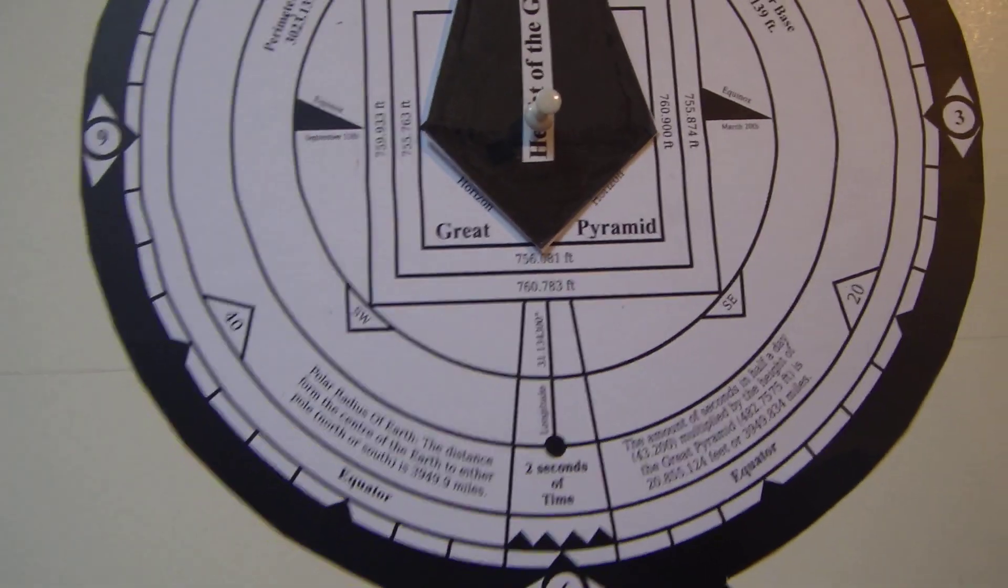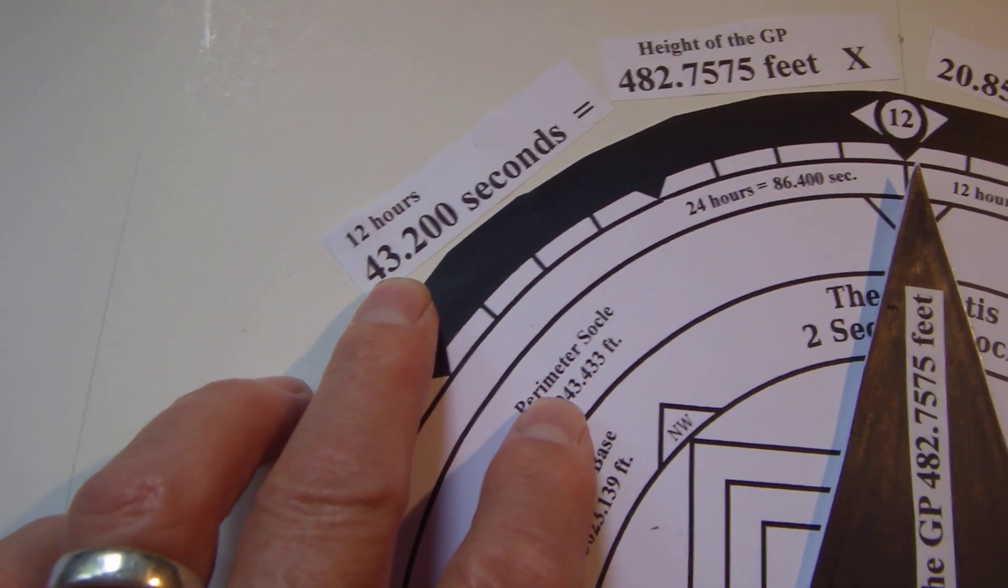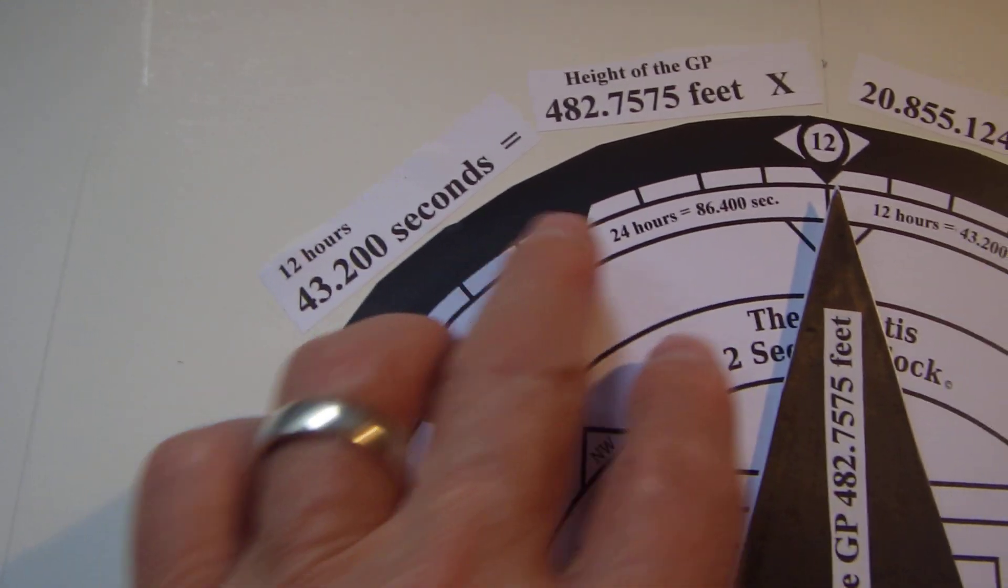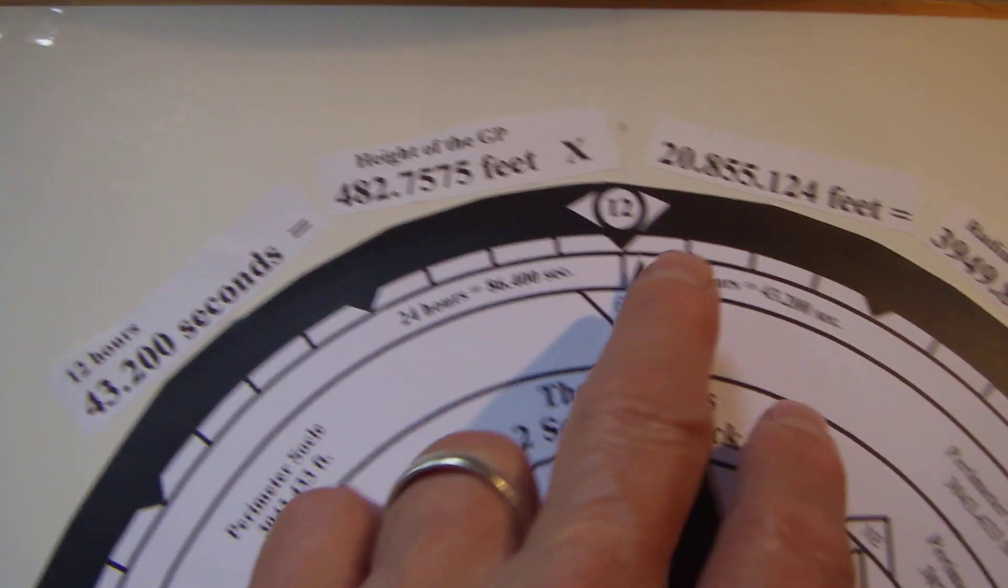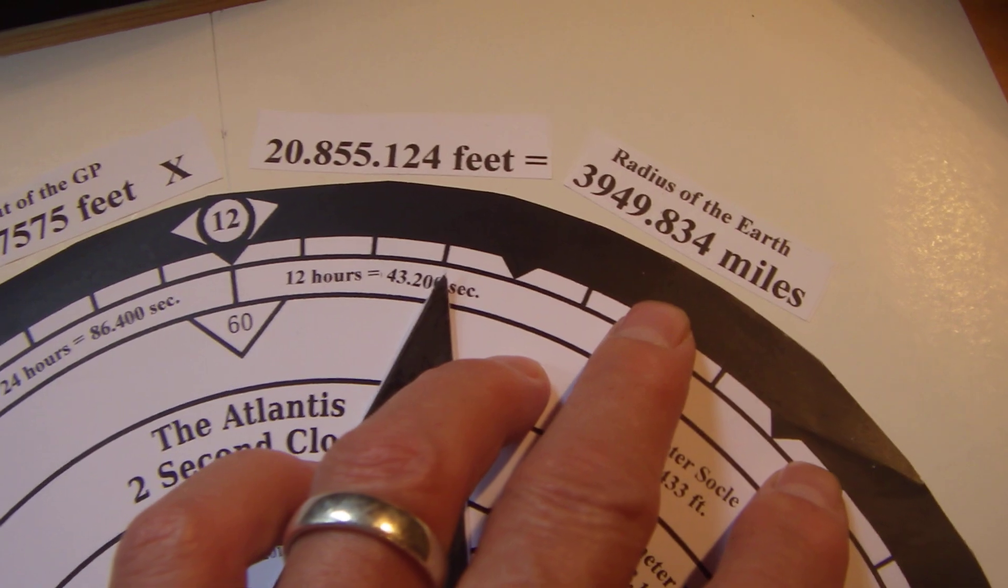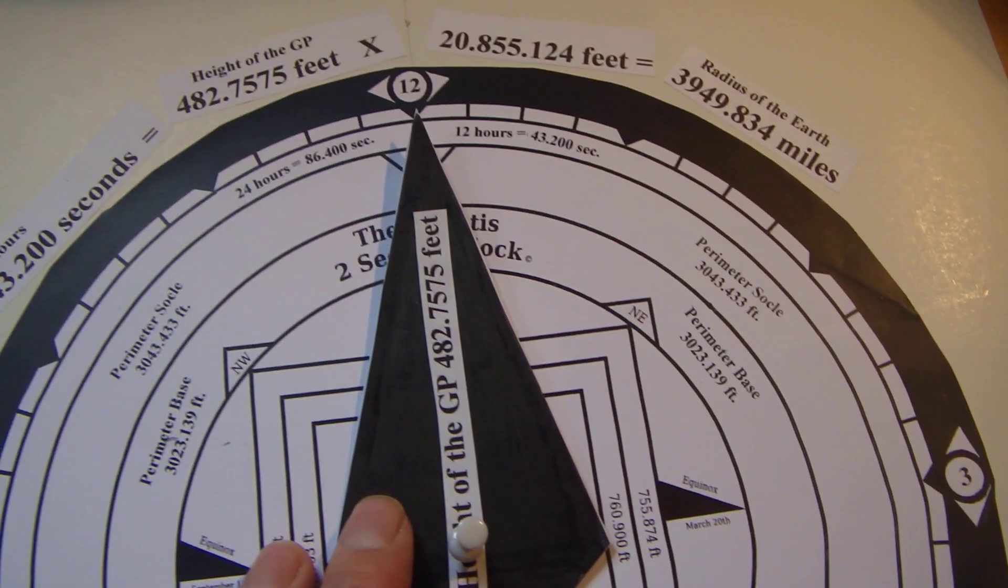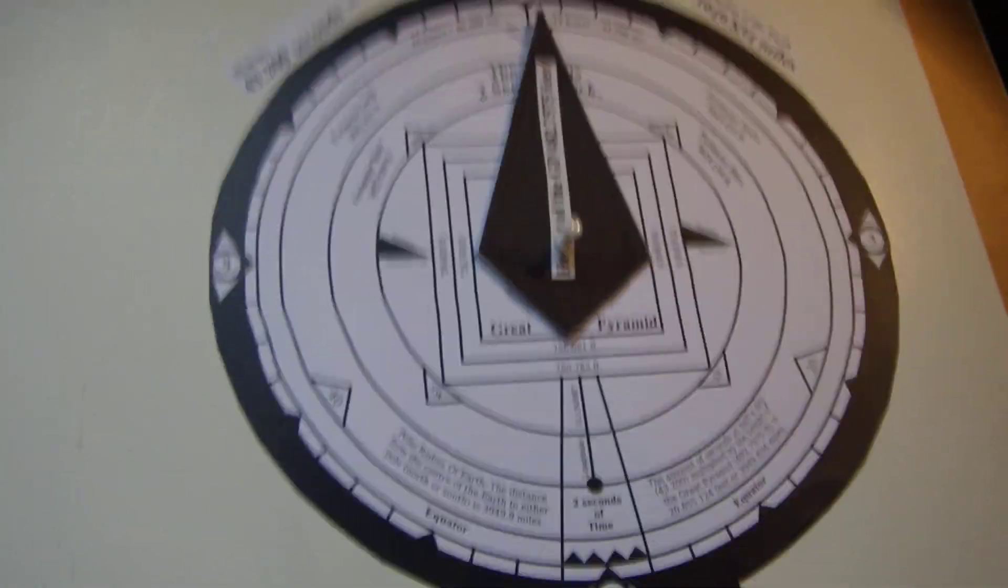Now to get the radius of the earth, we have 12 hours in a half a day, which equals 43,200 seconds, multiplied by the height of the Great Pyramid of Giza. And here's the feet, and then the radius is here: 3,949 miles. And that's very close to the accurate calculations that are known today for the radius of the earth from either pole.